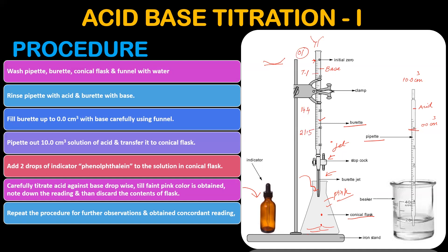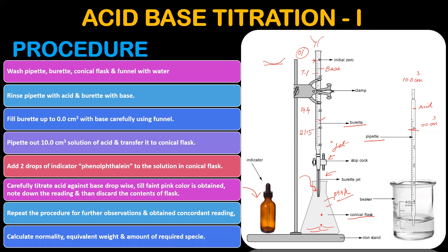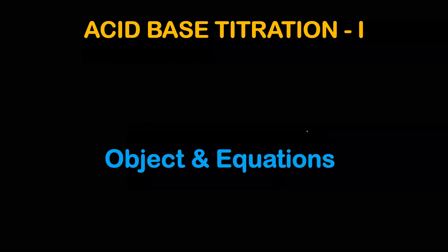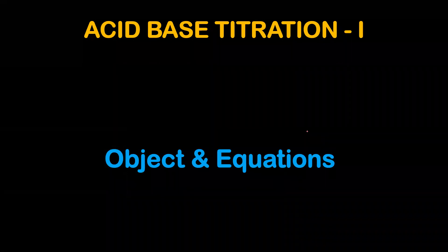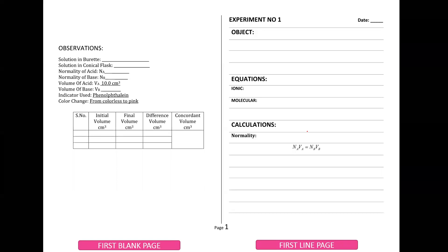You have to write your readings. Now with the readings, you have to write the normality, equivalent weight, and amount. So the experiment is one and the object is one. Your journal sketch will be in the first blank page, then the observation table will be on the first line of the right-hand page. You have to select object, equations, and calculation.